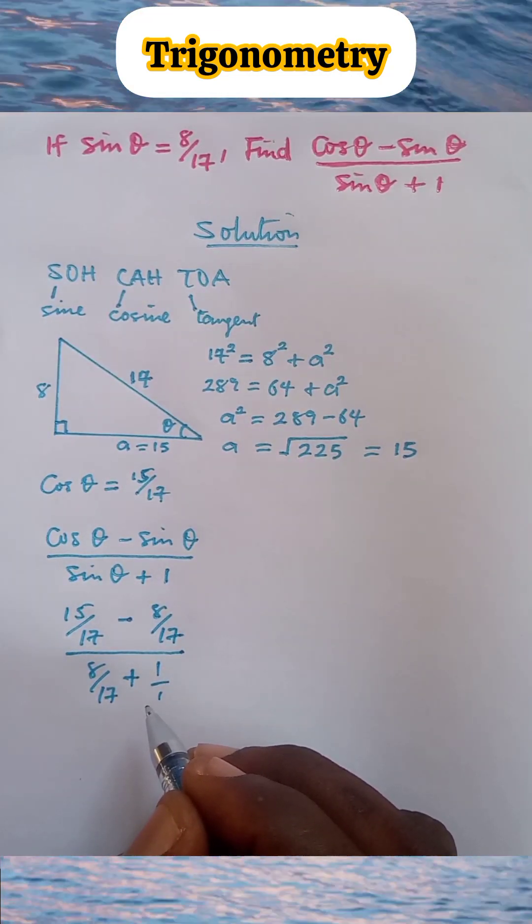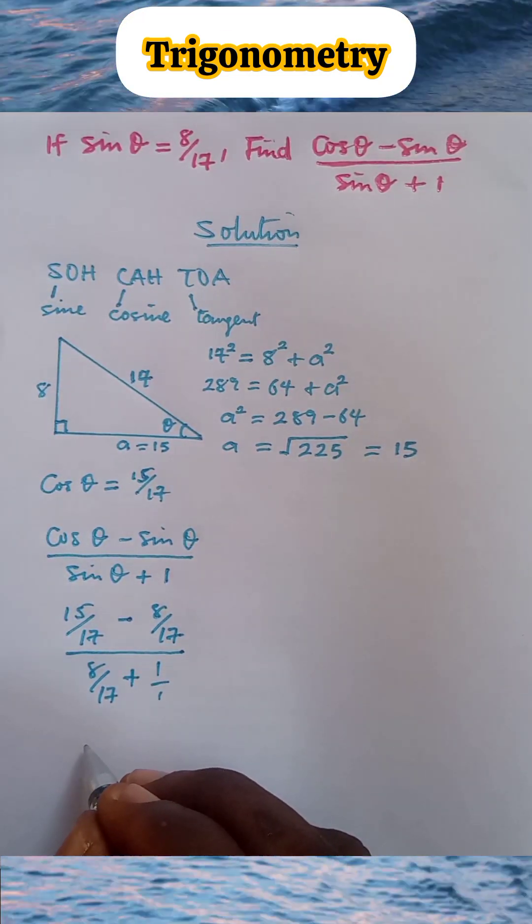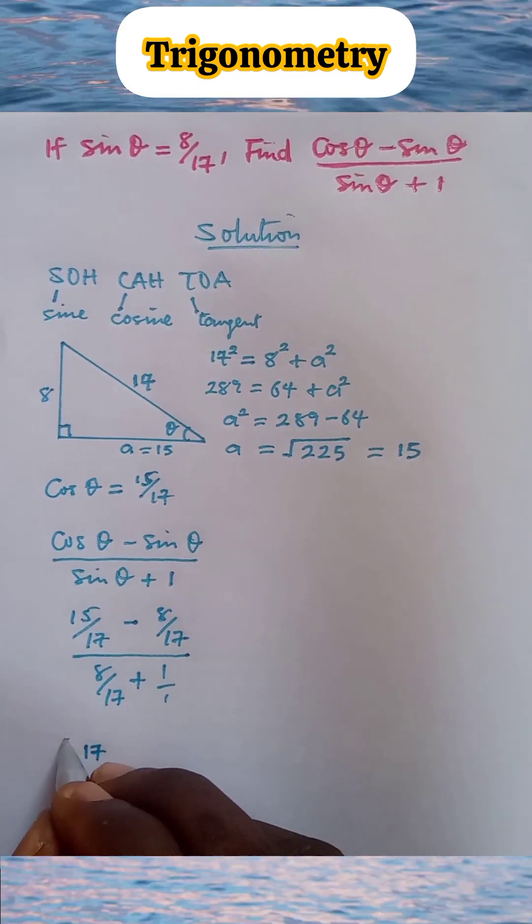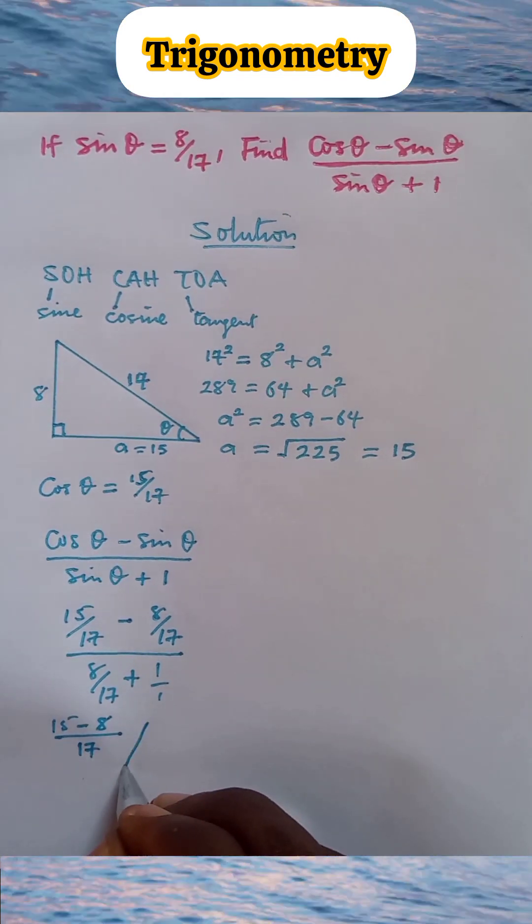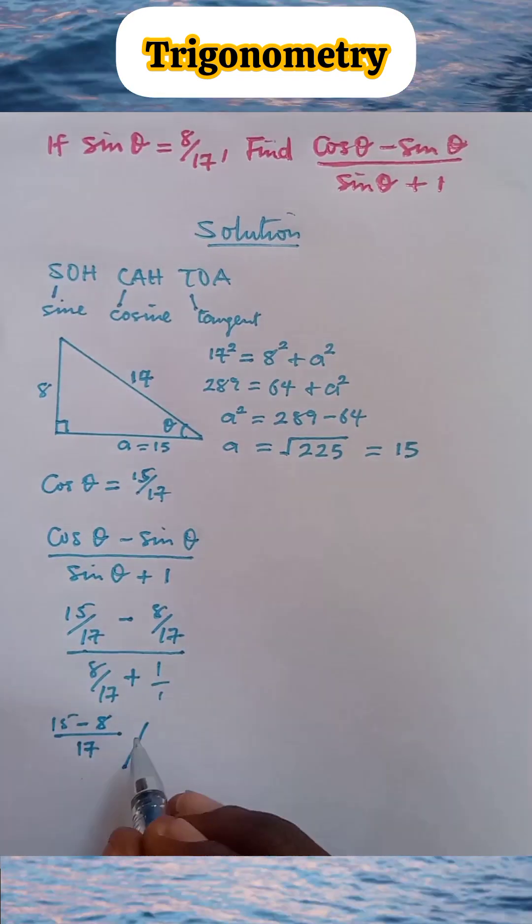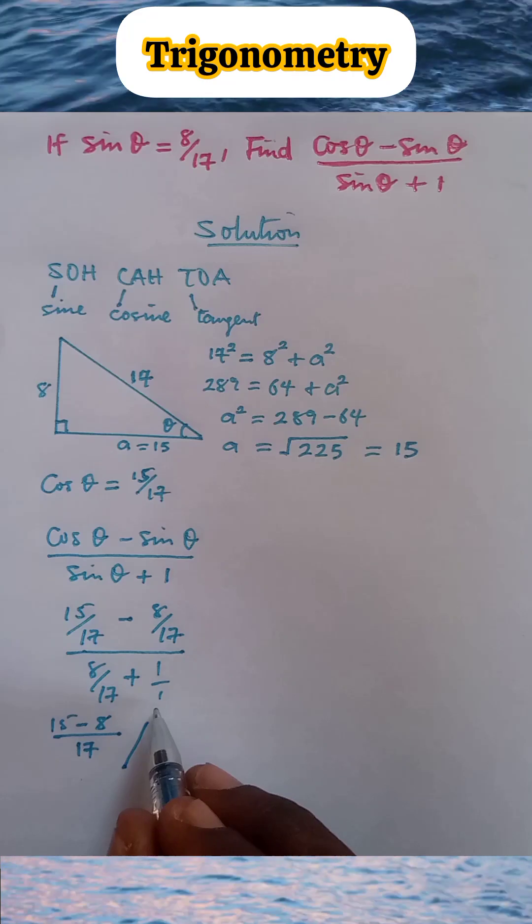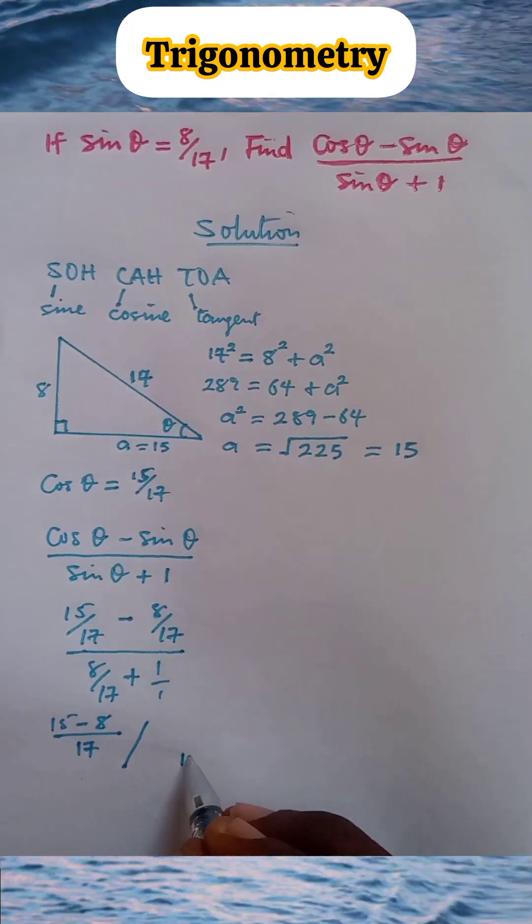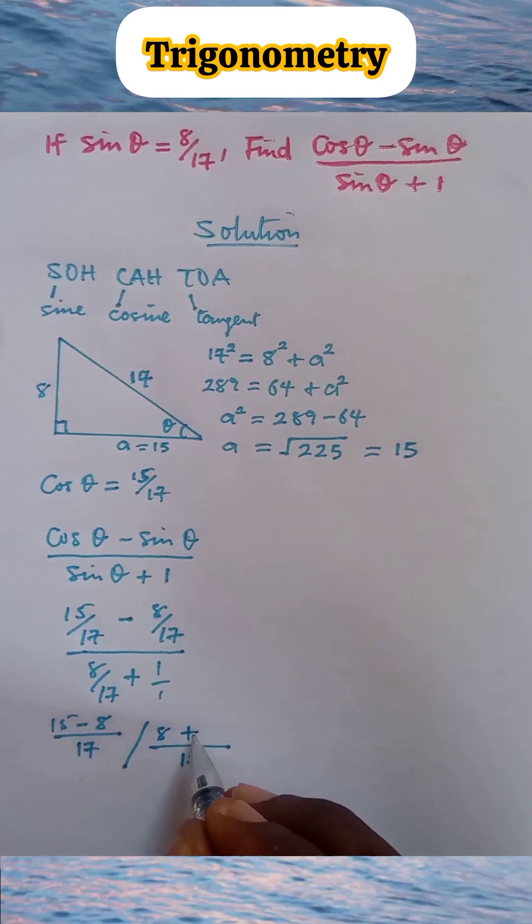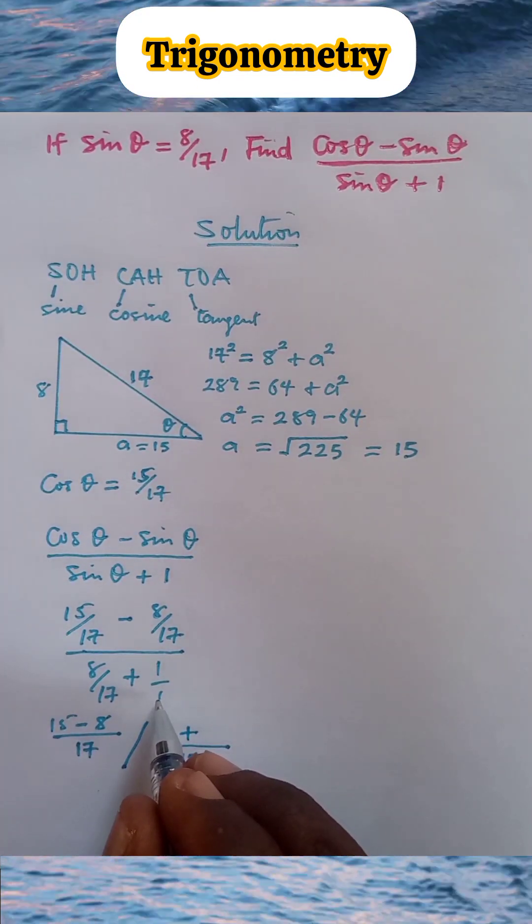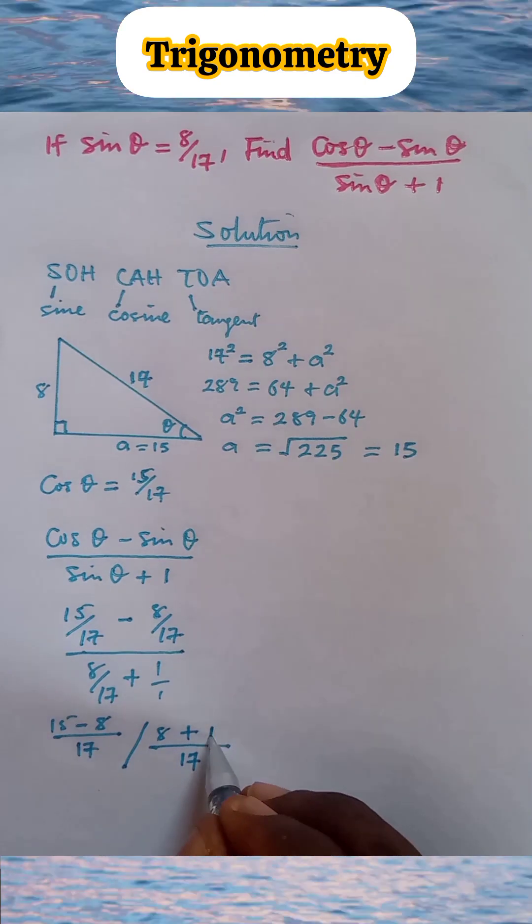Looking at the numerator, we take the LCM, which is 17, all over, we have 15 - 8. Divide by, now for the sake of space, this division and these are the same thing. So here, LCM is 17 as well. All over, 17 ÷ 17 = 1 × 8 = 8, plus 17 ÷ 1 = 17 × 1 = 17.